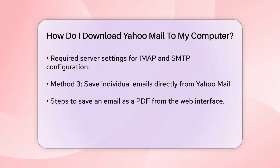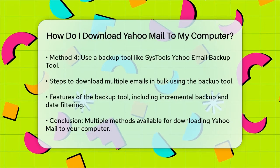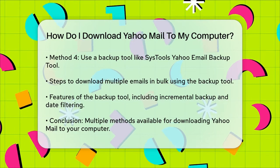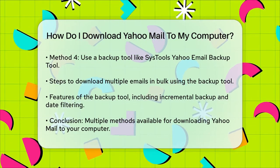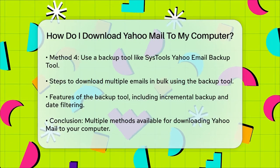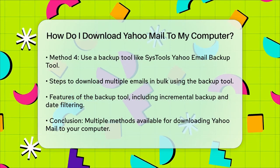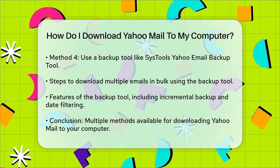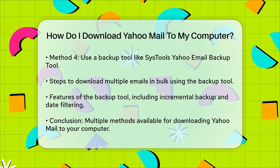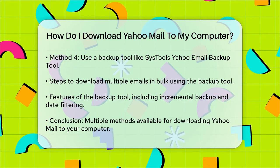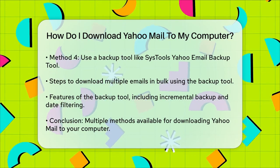Using a backup tool. For a more comprehensive solution, you can use a specialized tool like SysTools Yahoo Email Backup Tool. This software allows you to download multiple Yahoo emails to your computer in bulk, along with attachments. Here's how it works: download and install the SysTools Yahoo Email Downloader Tool, enter your Yahoo Mail credentials and log in, choose the export type (e.g., PST, EML, etc.), select the location where you want to save the files, and click Start to begin the download process.